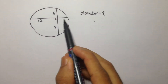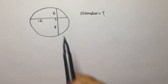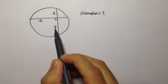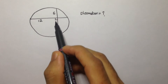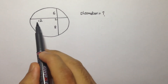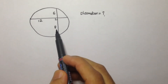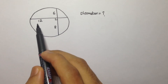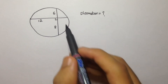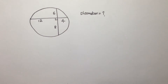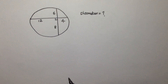When two chords intersect, the product of the two segments of one chord equals the product of the two segments of the other. So 6 times 8 is 48, and 12 times what equals 48? 12 times 4 is 48, so this missing length is 4.